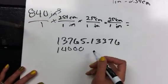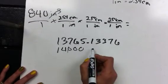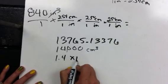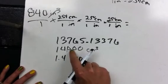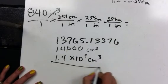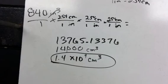So now you could end up with 14,000 centimeters cubed, or 1.4 times 10 to the fourth centimeters cubed would be the correct answer in sig figs and scientific notation.